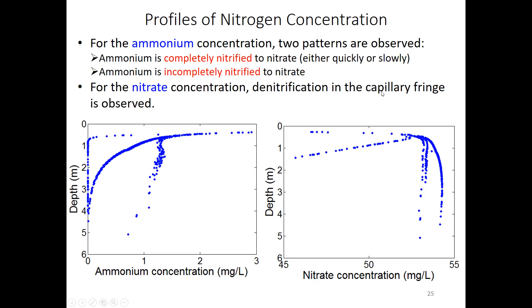The capillary fringe is a relatively thin layer above the water table. Although it is unsaturated in terms of matric potential, the pore space is saturated — creating anaerobic conditions — which is why denitrification occurs there. This seems reasonable from a physical perspective.